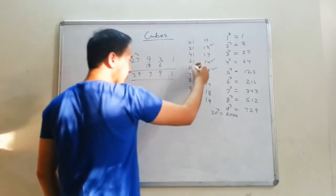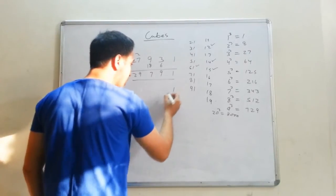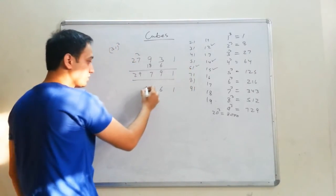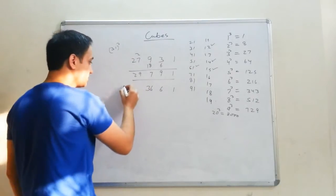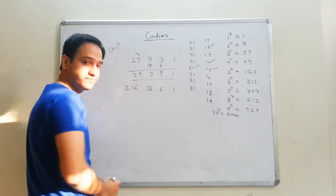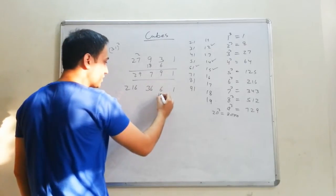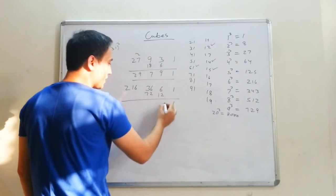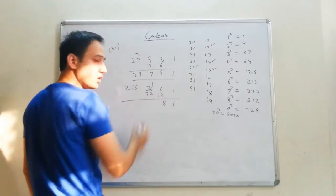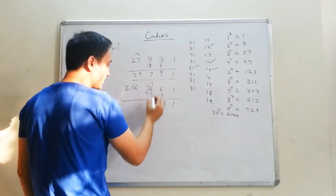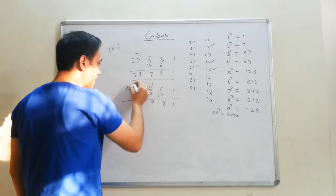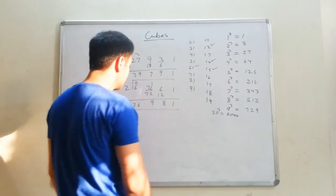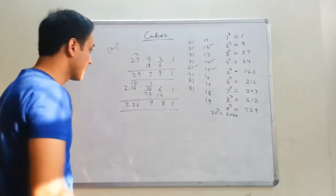Similarly, cube of 61: write 1, 6. Square of 6 is 36, cube of 6 is 216. Double these digits: 12 and 72. Add: 1, then 8, then 1, carry 1. 3 plus 6 is 9, then 10, carry 1. The answer is 226,981.